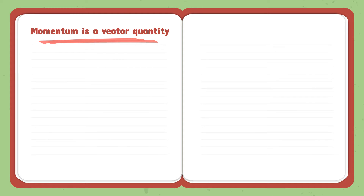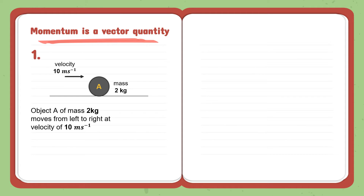I will show you briefly how momentum is a vector quantity. We will start with case 1: object A of mass 2 kg moves from left to right at a velocity of 10 m/s. By applying the momentum formula, momentum A equals MV, and after substituting the values, we get momentum A equal to 20 kg·m/s.